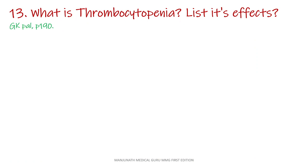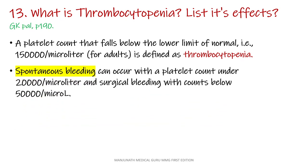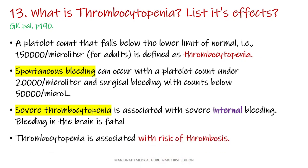Question number 13: What is thrombocytopenia? List its effects. The answer is from GK Paul, page number 190. A platelet count that falls below the lower limit of normal, that is 1,50,000 per microliter for adults, is defined as thrombocytopenia. Spontaneous bleeding can occur with a platelet count under 20,000 per microliter, and surgical bleeding with counts below 50,000 per microliter. Severe thrombocytopenia is associated with severe internal bleeding. Bleeding in the brain is fatal. Thrombocytopenia is also associated with risk of thrombosis.